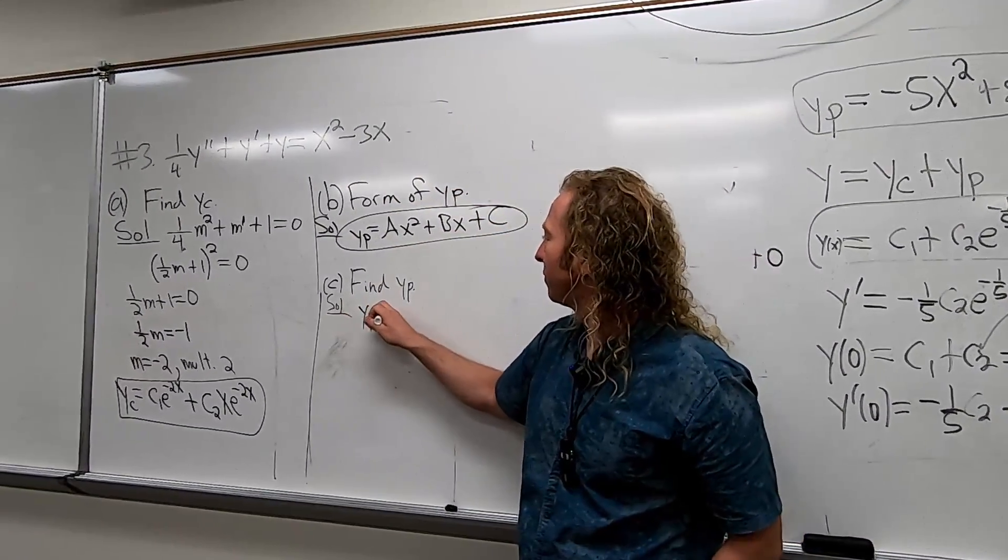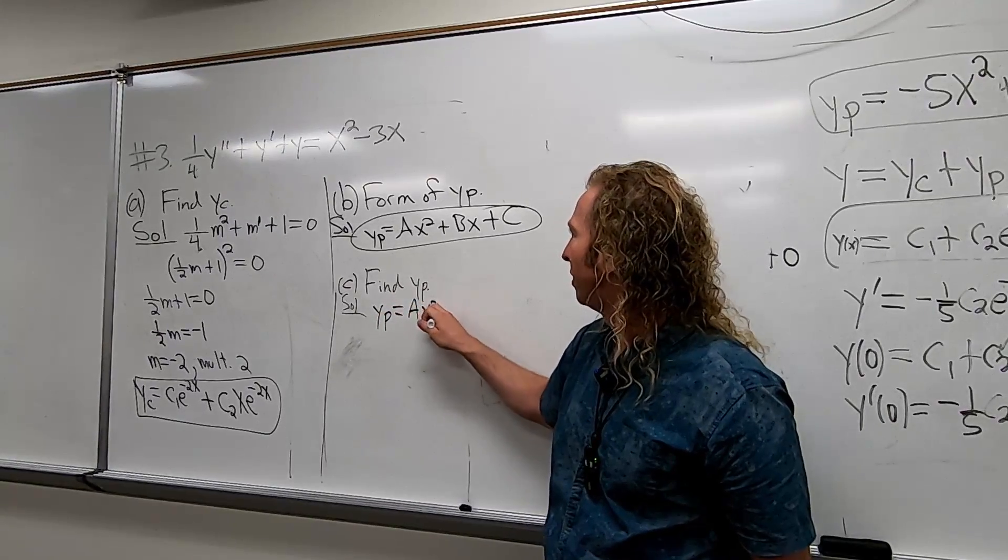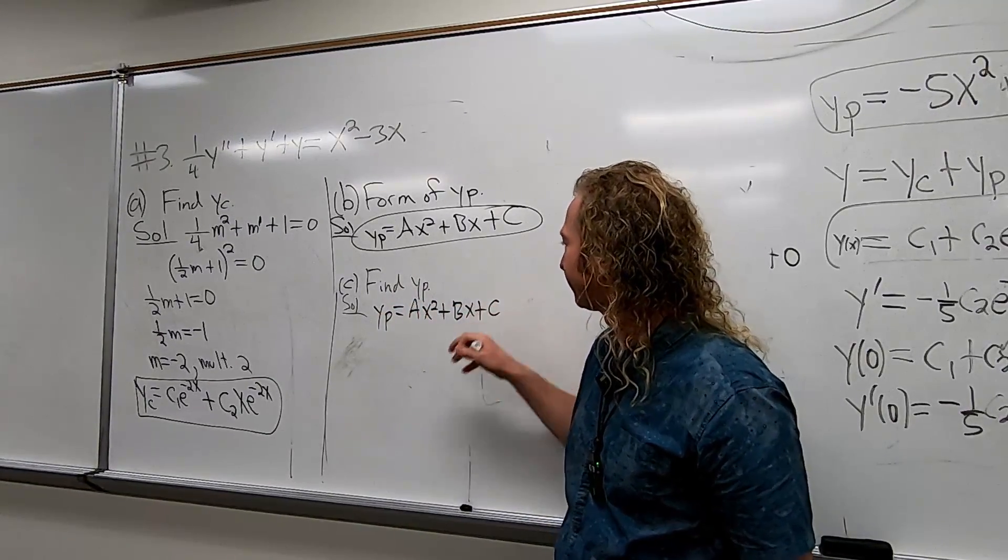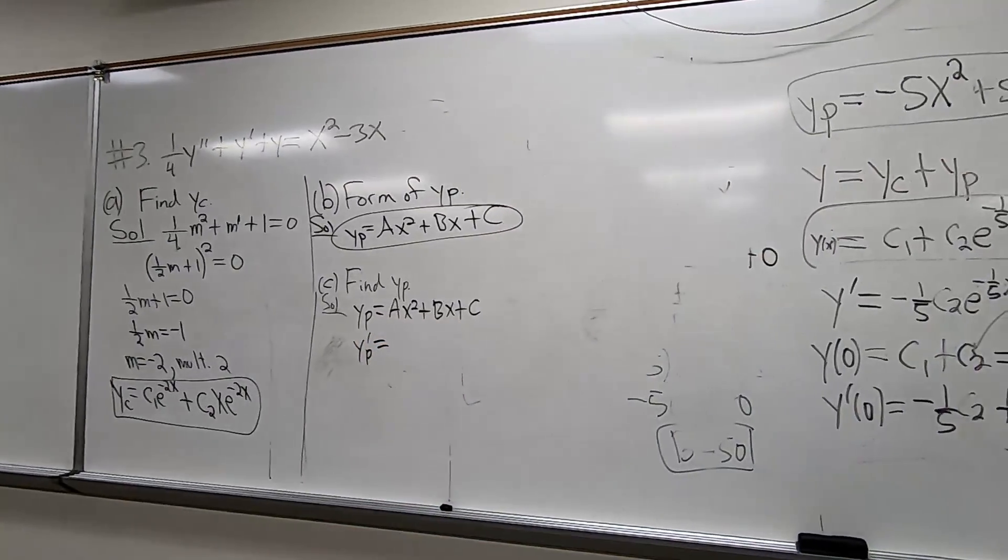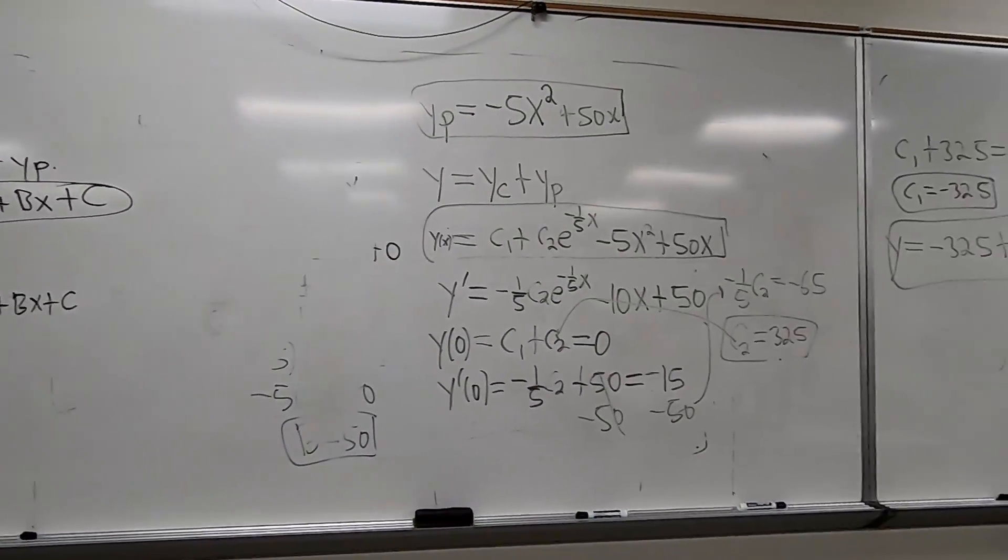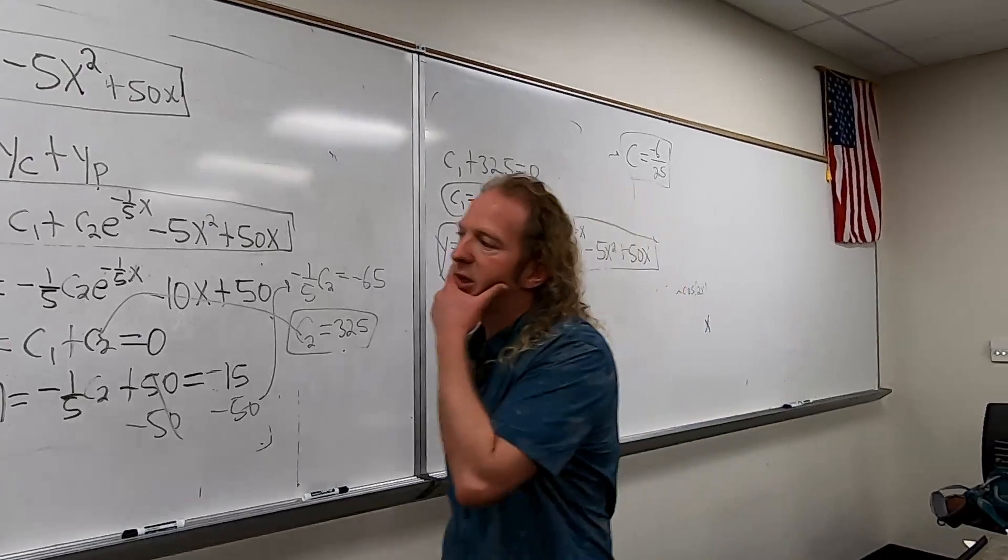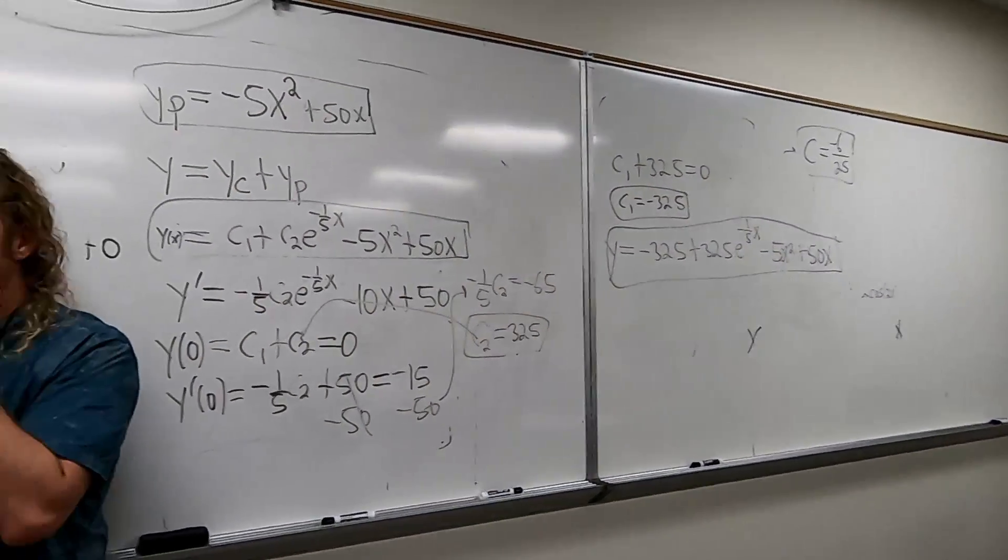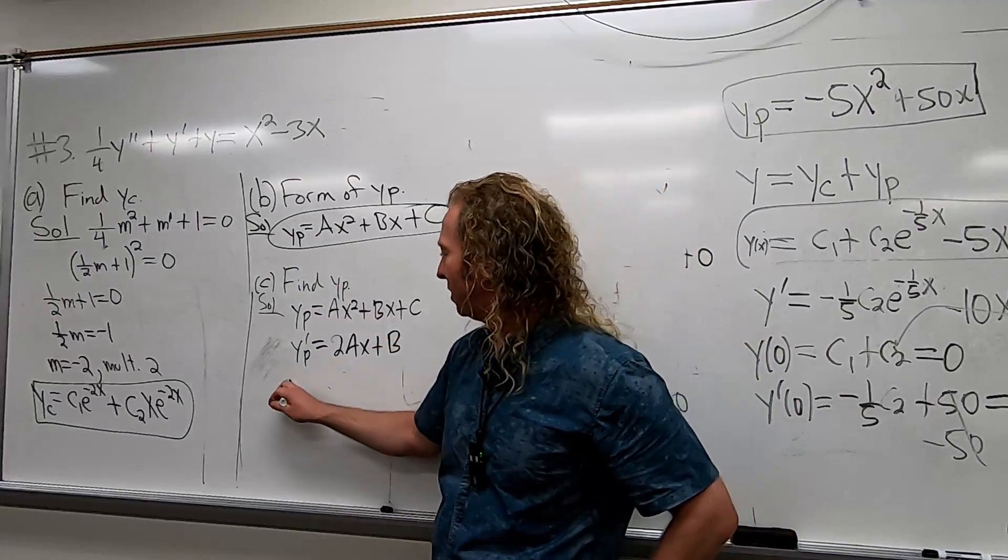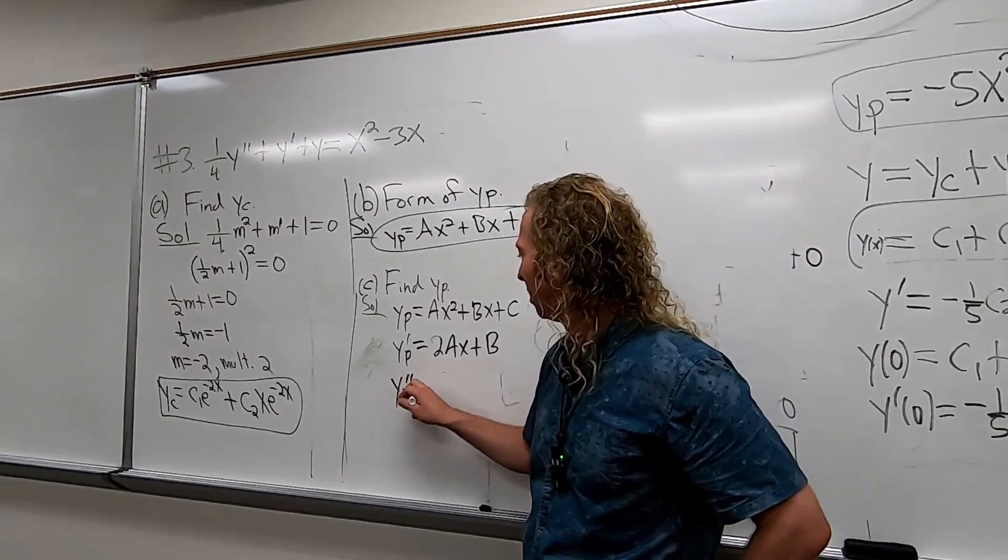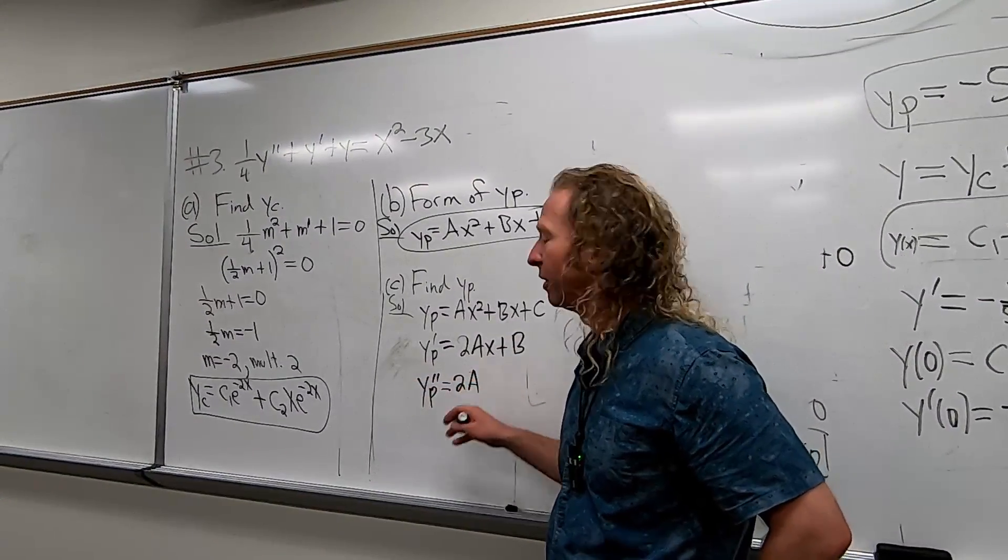Okay, so now we just have to take the derivative of this thing and plug it into the DE. So I'm going to write it again, YP, just because AX squared plus BX plus C. YP prime. So this will be 2AX plus B. And then YP double prime is just 2A.